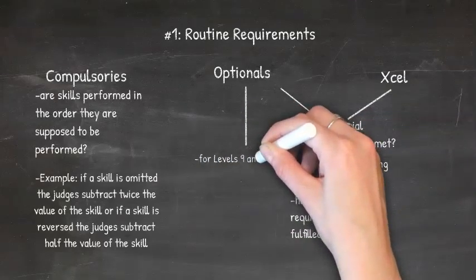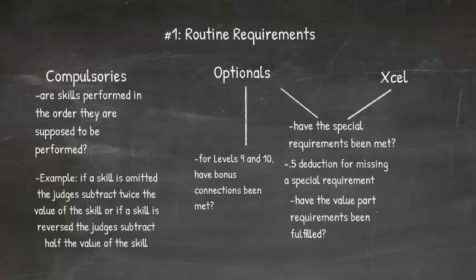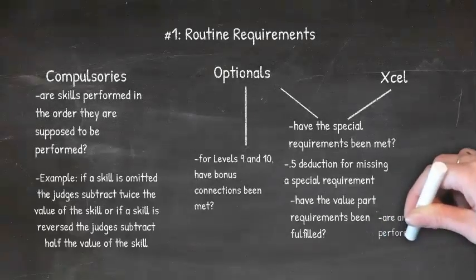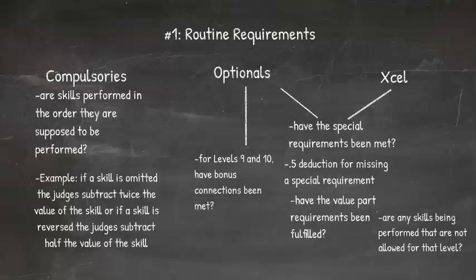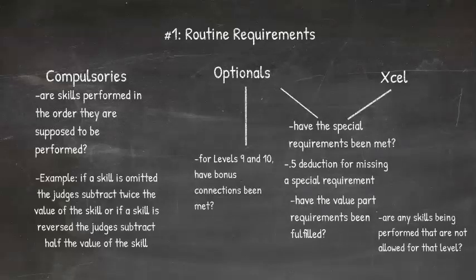Levels 9 and 10 also need bonus connections in order to start from a 10.0 starting score, so judges look for that when evaluating those routines. Additionally, judges check whether a gymnast performed a skill not allowed at her level. If a gymnast performs a C-valued skill at a level where only B-value skills are permitted, a deduction is taken from her start value. In some cases, performing a disallowed skill — such as a vault not permitted at that level — can void the routine entirely, resulting in a score of zero.